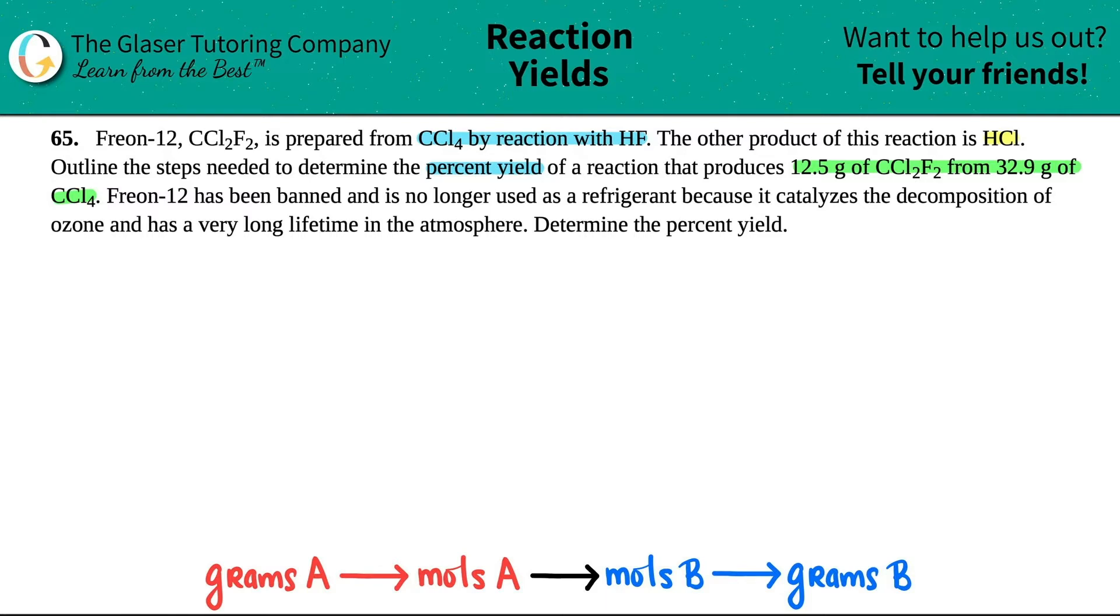Okay, so we need to outline these steps, but most importantly, we actually need to determine the percent yield. So whenever we're doing stoichiometry or percent yields, we always need a balanced equation. So if we're going to outline the steps, step one is to get the balanced equation.